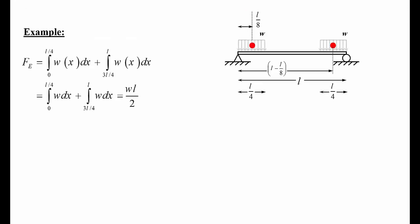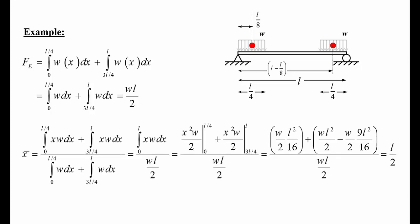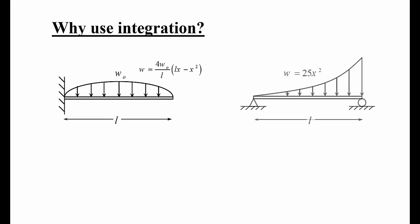For the two-load example, we divide the work into two integration segments: the first load is between 0 and L/4, so the first integration goes from 0 to L/4; the second load is from 3L/4 to L. Simplifying gives F_E = WL/2, and the centroid comes out to L/2 — the same results as before. So why use integration? Because for complex or curved loads, summation isn't practical.